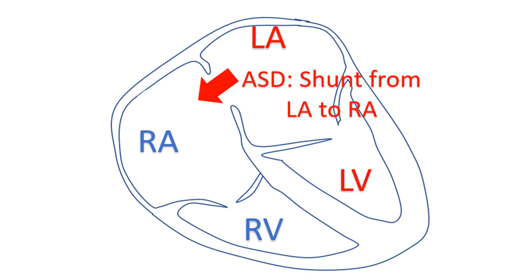Pulmonary blood flow will be very high when there is a large atrial septal defect. The ratio between the pulmonary and systemic blood flows is known as the shunt ratio, which is more than 2 to 1 in large ASD.